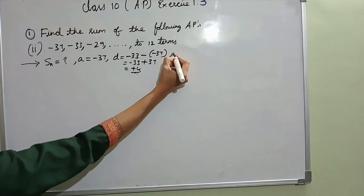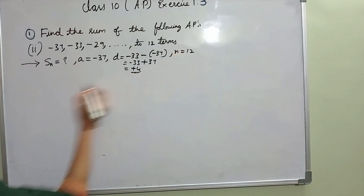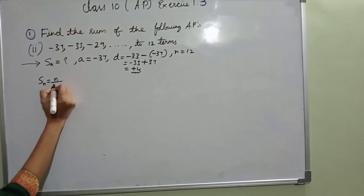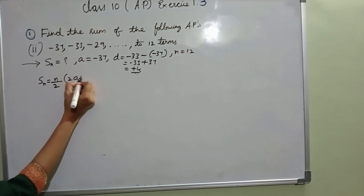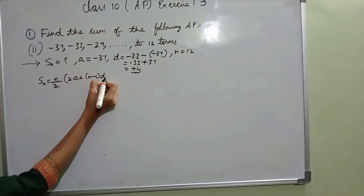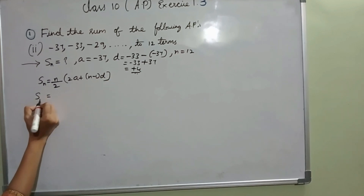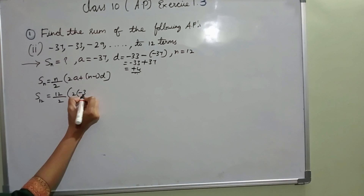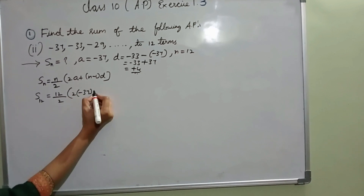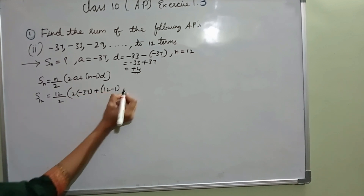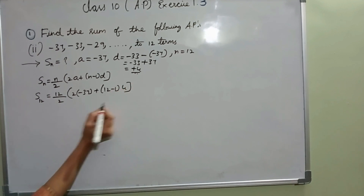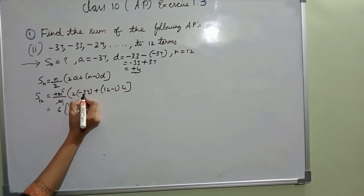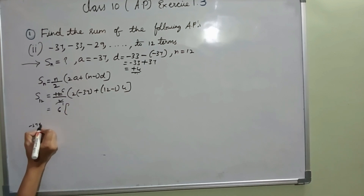Up to 12 terms — N value they have given is 12. We already know the SN formula: SN is given by N by 2 into 2A plus N minus 1 into D. Substituting: 12 by 2 into 2 times A is minus 37, plus 12 minus 1 into D is 4.